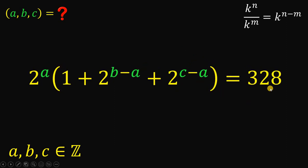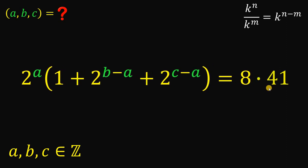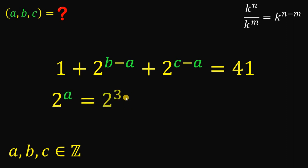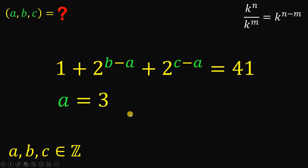Now, what we're going to do is to factor 328. And 328 can be factored as 8 times 41. Take note that on the right-hand side we have an even number times an odd. On the left-hand side, 2 raised to A is always even, and 1 plus 2 raised to something plus 2 raised to something is definitely odd. Therefore, the only possible value for 2 raised to A must be equal to 8. So we can say that 1 plus 2 raised to B minus A plus 2 raised to C minus A equals 41, and 2 raised to A equals 8. Since 8 is 2 raised to 3, we can say that A must be equal to 3.